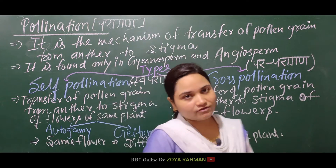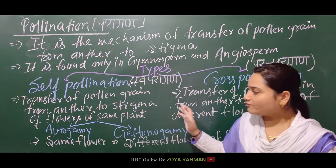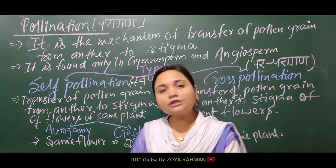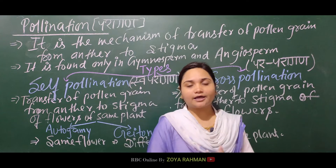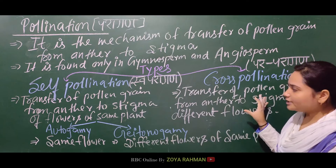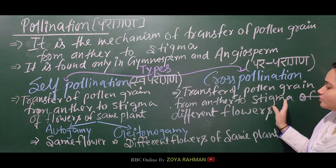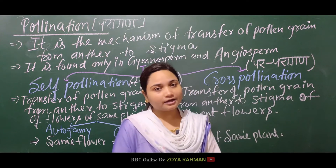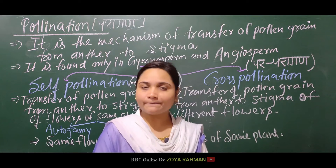The definition of self-pollination is: transfer of pollen grain from anther to stigma of the same plant. If paragana occurs within the same plant, we call it swapragan. For cross-pollination: transfer of pollen grain from anther to stigma of a different plant's flower. If that occurs, we call it parparagana, or cross-pollination.